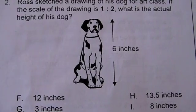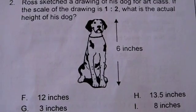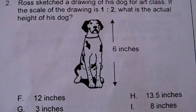Ross sketched a drawing of his dog for art class. If the scale of the drawing is 1 to 2, what is the actual height of his dog?